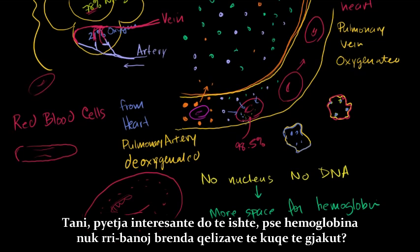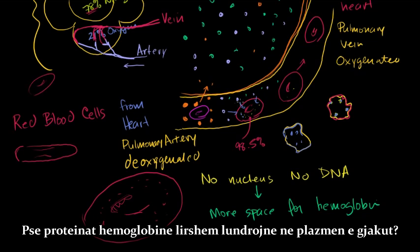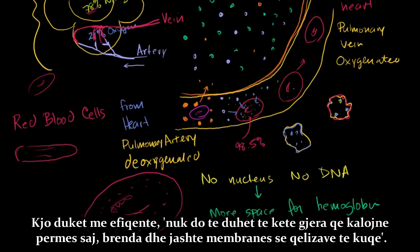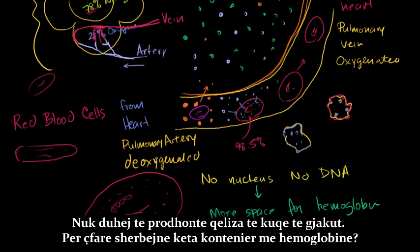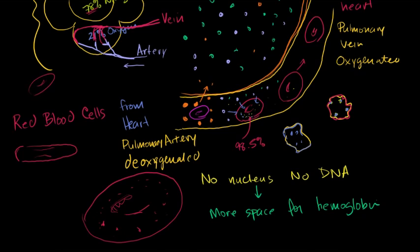One interesting question is: why does the hemoglobin even have to reside within the red blood cells? Why aren't hemoglobin proteins just freely floating in the blood plasma? That seems more efficient — you don't have to have things crossing in and out of these red blood cell membranes, and you wouldn't have to make red blood cells. What's the use of having these containers of hemoglobin?